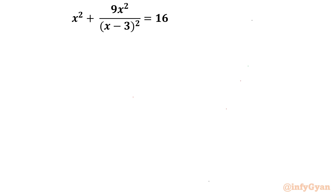Welcome to Infigyan, my dear friends, in this very exciting and powerful video of algebraic challenging equations. In this series we are going to take up one very interesting rational equation today. The equation is: x squared plus 9x squared over (x minus 3) whole square, equal to 16.